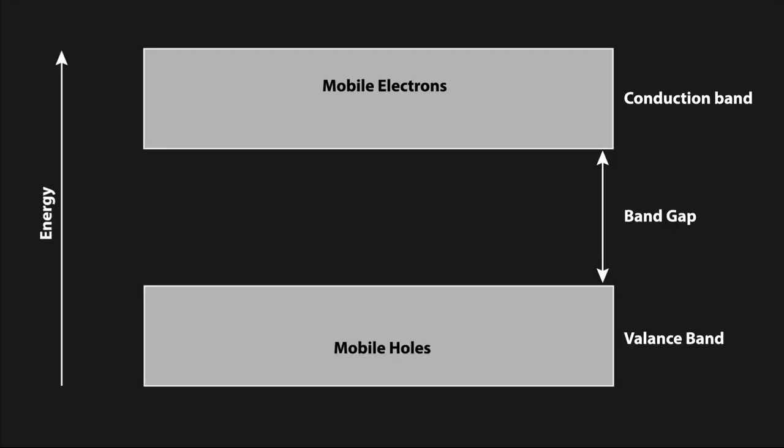The band structure contains a valence band, which represents where holes are mobile, i.e., if a hole has this energy, it is free to move throughout the material, a conduction band, which is the same as the valence band, but for electrons, and a band gap, which is a region in between these two bands.